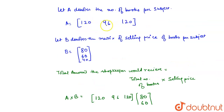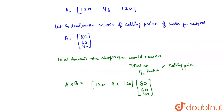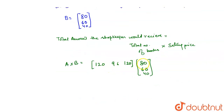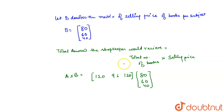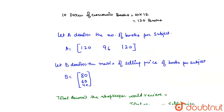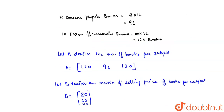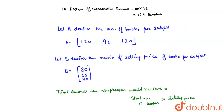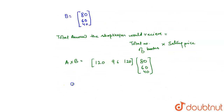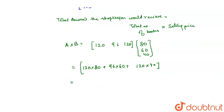Since A is a row matrix and B is a column matrix, multiplying 120 by 80 gives the total price of chemistry books sold, 96 into 60 gives the amount for physics books, and 120 into 40 gives the amount received from economics books. So the result is 120×80 + 96×60 + 120×40.